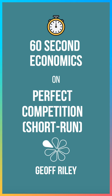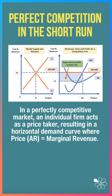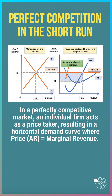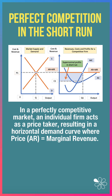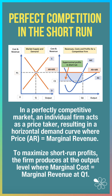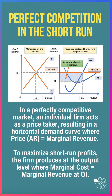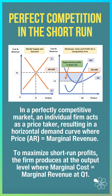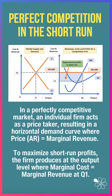60 second economics on the short run in perfect competition. In a competitive market, an individual firm is a price taker — they take the market price shown on the left hand side of the diagram, resulting in a horizontal demand curve where price or average revenue equals marginal revenue. To maximize short run profits, the firm produces at an output where marginal cost equals marginal revenue — output q1 on the right hand side.